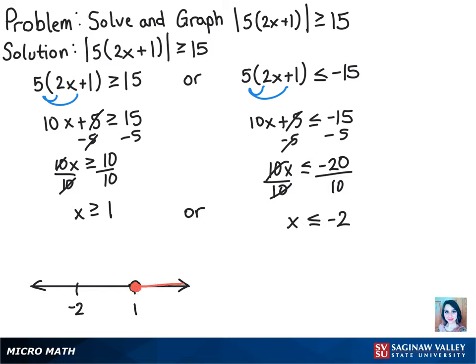And then for this other solution here, negative 2, we know once again that it includes the negative 2, since we have the equal to bar under the less than sign. So we'll shade in the bubble. And then since x is everything less than negative 2 as well, we will shade to negative infinity.